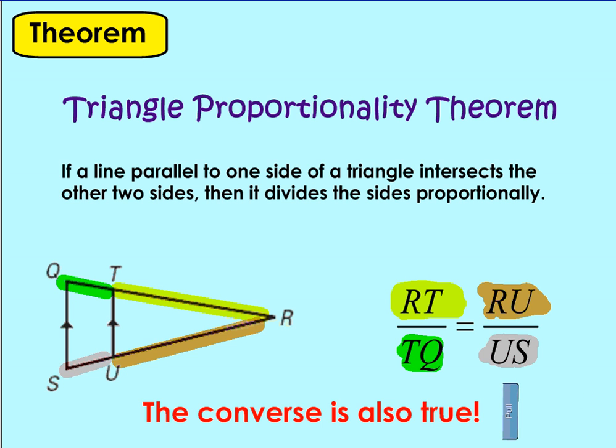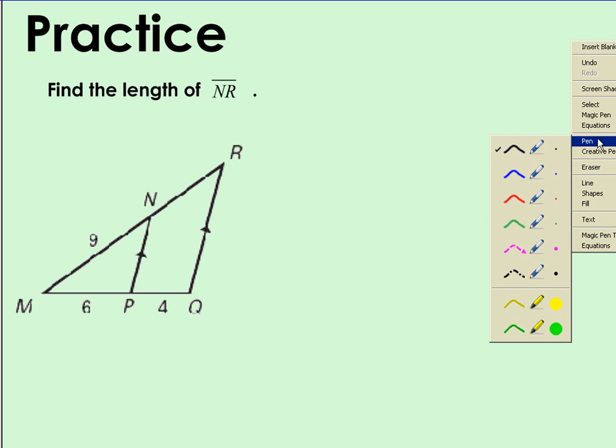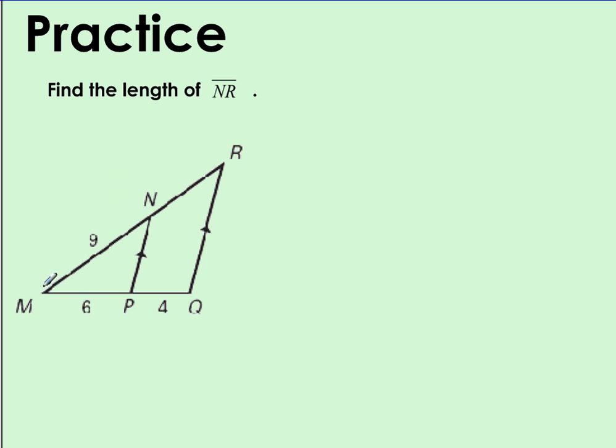Let's see a couple examples. Our first example here asks us to find the length of NR. And using our Triangle Proportionality Theorem, I know that I can set up a proportion in order to solve this. So I'm going to go ahead and say MN over NR should be equal to MP over PQ. And as we substitute those values in, I'm going to say 9 over x, because that's the length we're trying to solve for, is equal to 6 over 4.